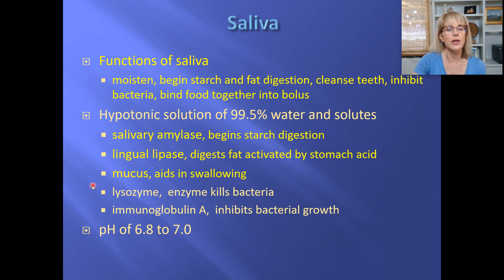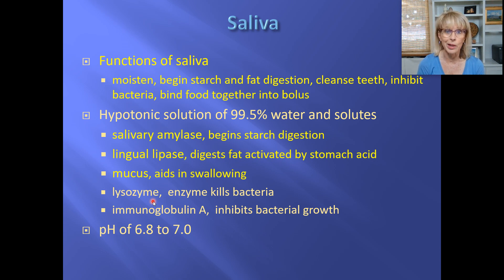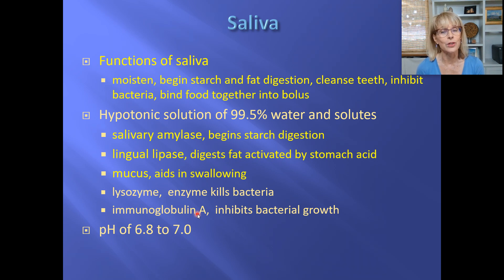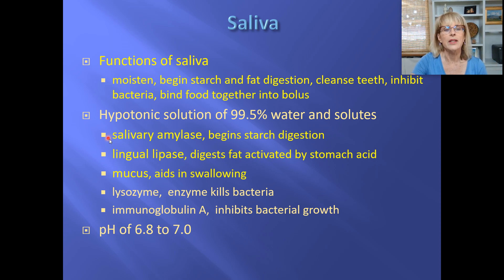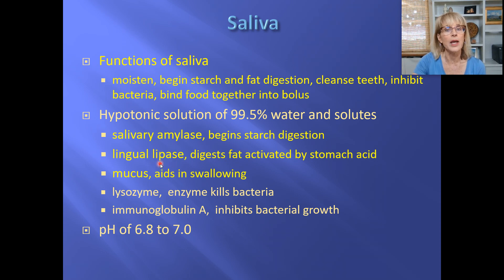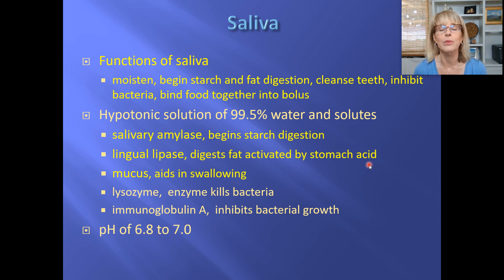What else is in saliva? Mucus, and lysozyme — an enzyme designed to deter bacteria. It's not 100% effective since we have plenty of bacteria in our mouths, but it keeps the population manageable. There is also an antibody called IgA found in saliva, also designed to discourage bacterial growth. Saliva has a pH of around seven, which is the optimal pH for salivary amylase. Lingual lipase does not work at pH seven — it prefers a pH of two or three, which it encounters in the stomach.